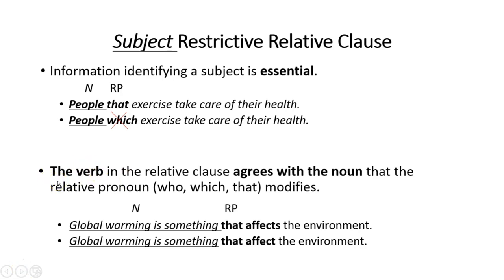The second rule regarding restrictive relative clauses is that the verb in the relative clause must agree with the noun that the relative pronoun who, which, or that modifies. For example: 'Global warming is something that affects the environment.' Global warming is the subject, and that refers back to it. Since global warming is singular, we use affects with the third-person singular marker -s. Using affect without -s would be incorrect, as that form is only for plurals.